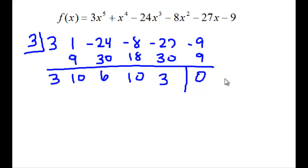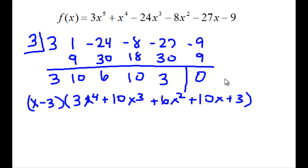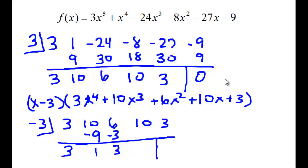So that leaves us with x minus 3 times 3x to the 4th plus 10x to the 3rd plus 6x squared plus 10x plus 3. So let's try our negative 3. 3 times negative 3 is negative 10, 1, negative 3, 3, negative 9, 1, and negative 3 and 0.